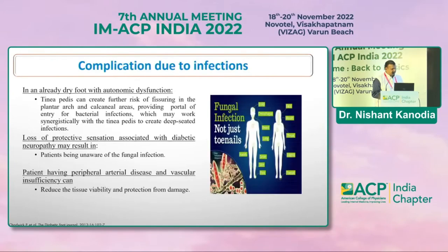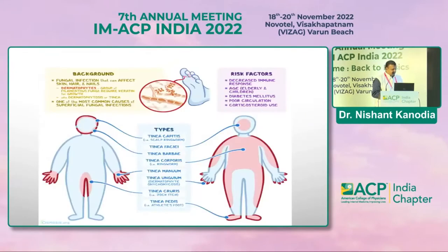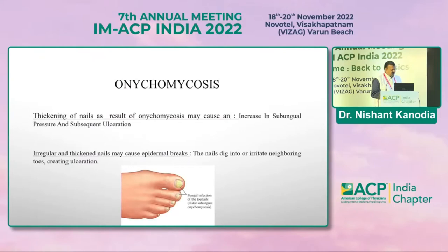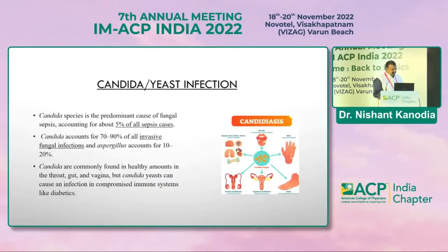Fungal infection can contribute to the development of ulceration and cellulitis in the diabetic foot in several ways: complications due to infections in an already dry foot or autonomic dysfunction, and loss of protective sensation associated with diabetic neuropathy meaning the patient is unaware of the infection. Peripheral arterial disease and vascular insufficiency reduce tissue viability. Regarding onychomycosis, thickening of the nails increases subungual pressure, leading to subsequent ulceration; the nail breaks on the epidermal surfaces and digs into the skin, creating ulcerations.